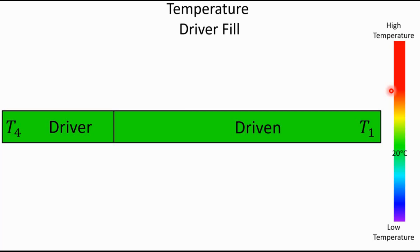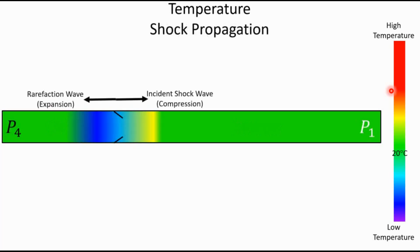So here we are, the driver is all the way full and we're just a few seconds from bursting, and now T1 is equal to T4. Unless you've heated the tube for some reason, your temperatures are just going to be the ambient temperature, and the diaphragm bursts and the shock begins propagating.